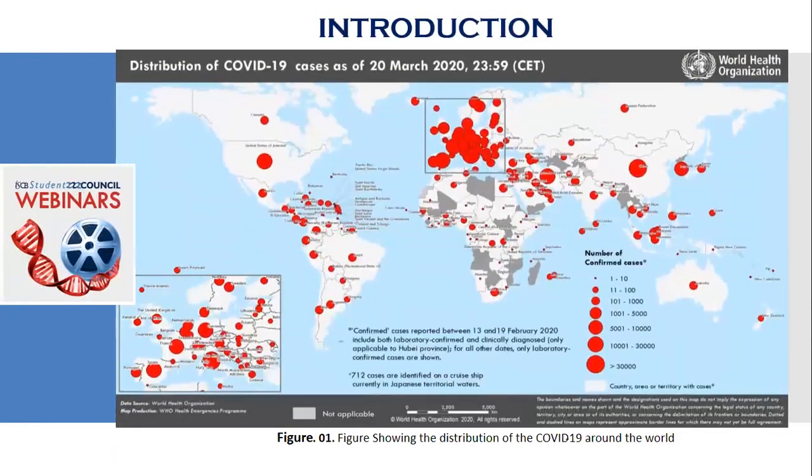As everybody knows so far, the coronavirus disease is caused by a virus known as the Severe Acute Respiratory Syndrome Coronavirus 2. In short form, it's called SARS-CoV-2. This disease originated in China in December 2019.